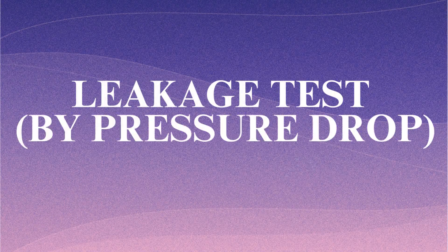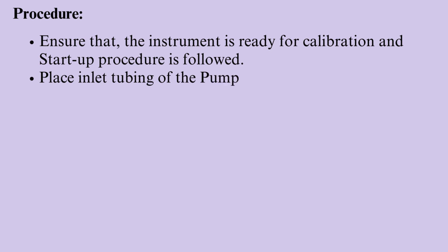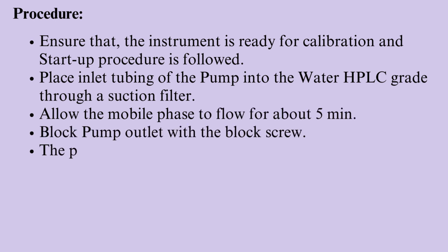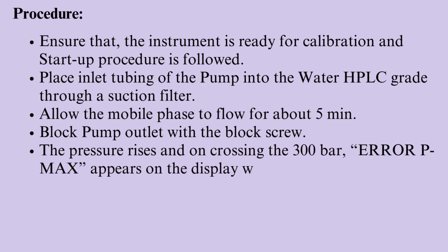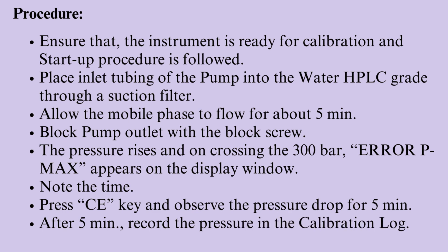Leakage test by pressure drop — procedure: Ensure that the instrument is ready for calibration and startup procedure is followed. Place inlet tubing of the pump into HPLC grade water through a suction filter. Allow the mobile phase to flow for about 5 minutes. Block the pump outlet with the block screw. The pressure rises, and on crossing 300 bar, error PMAX appears on the display window. Note the time. Press CE key and observe the pressure drop for 5 minutes. After 5 minutes, record the pressure in the calibration log.